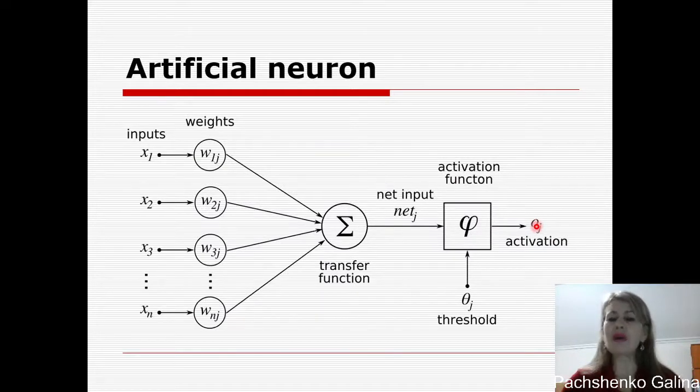Or you can see artificial neuron here with inputs, weights, transfer function or sum, and activation function. Here you can see the threshold or bias.